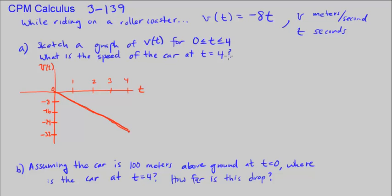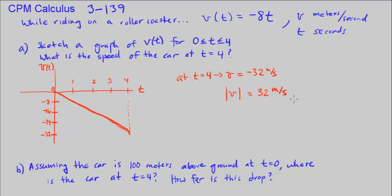What is the speed of the car at t equals 4? At 4 seconds, our output is negative 32. So velocity equals negative 32 meters per second. But speed is the absolute value of velocity, so speed equals 32 meters per second. Speed is just a magnitude, while velocity has both magnitude and direction — direction being negative or positive in this case.